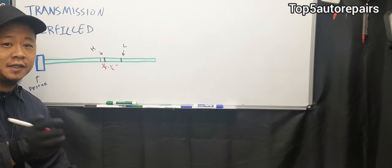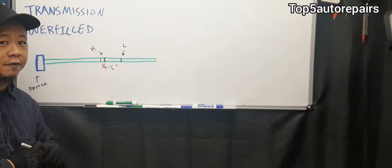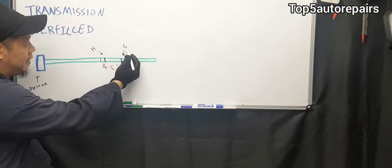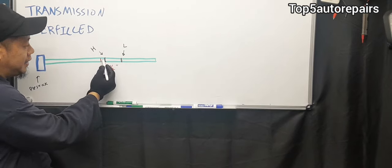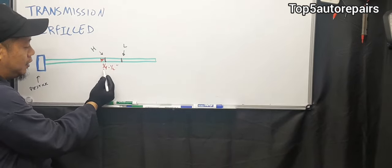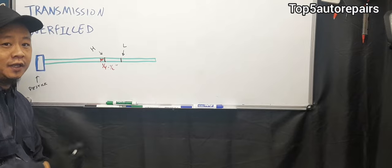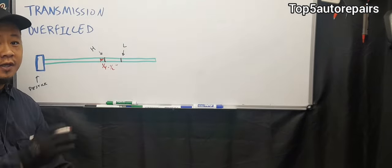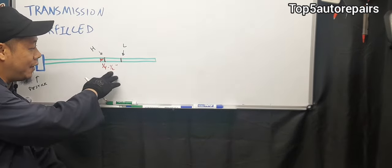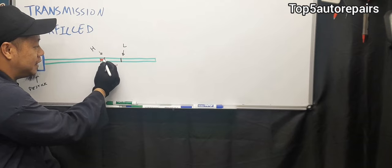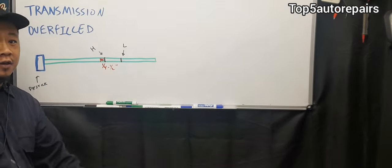What if you accidentally overfilled your transmission with just a little bit of fluid? For example, here's the high side and here's the low side. Let's just say you accidentally overfilled it with about a quarter of an inch to about half an inch of automatic transmission fluid. In that case, if it's no more than half an inch overfilled above this high side, you're okay.